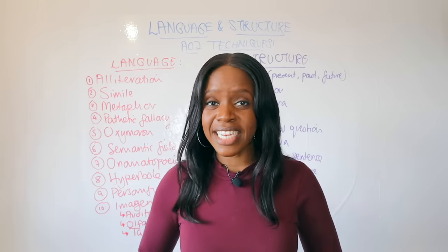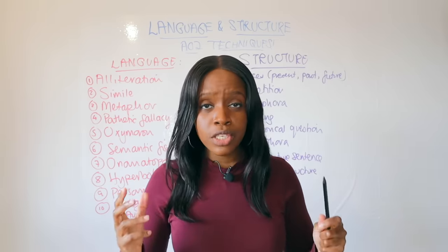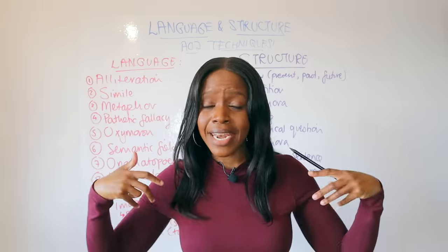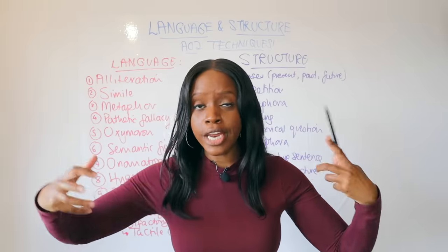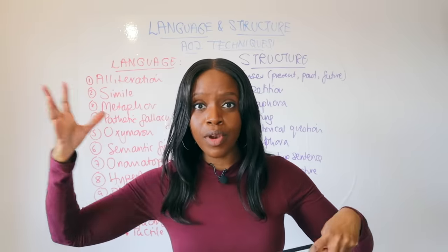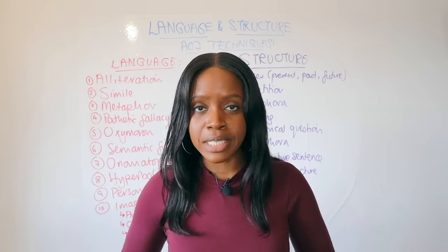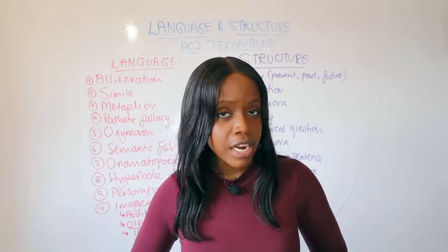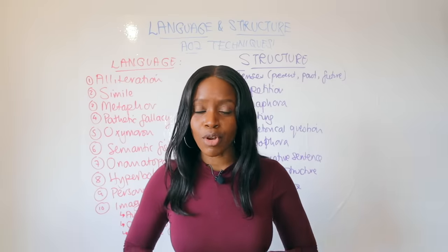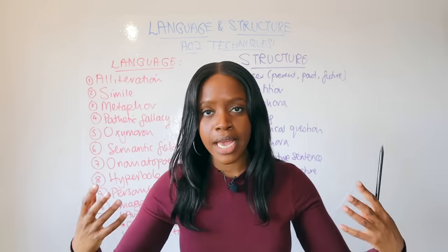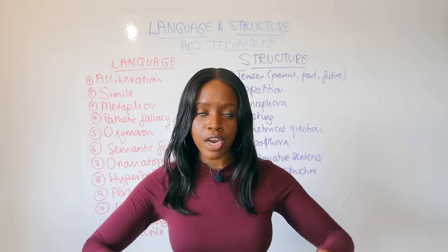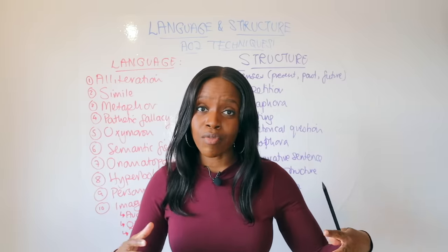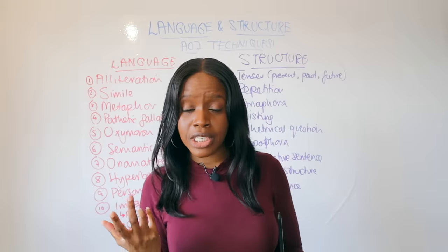Hello and welcome back to yet another GCSE lesson. Lots of you tend to be a little bit confused with AO2 — what does it mean and how can you even find good AO2 points to include in both your language and literature exams? Remember that AO2, Assessment Objective 2, relates to relevant use of subject terminology — a fancy way of saying that when the examiner is looking at your response, when you're making your point and adding your evidence, you need to identify whether the writer has used a language or structure technique.